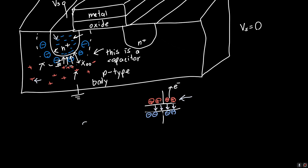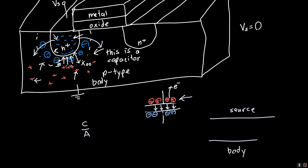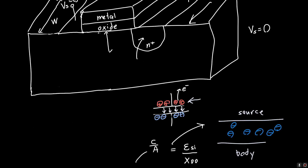We can calculate the capacitance per unit area of this structure. If we fold out the depletion region into a flat source and flat body, the capacitance per unit area is just the permittivity of silicon divided by the depletion region thickness: epsilon_Si / XD0. All we need now is to figure out the area.